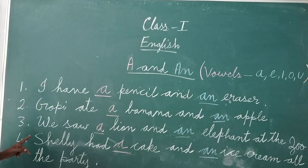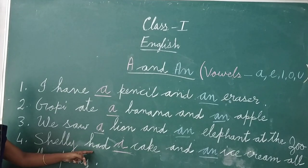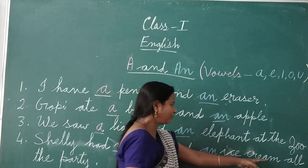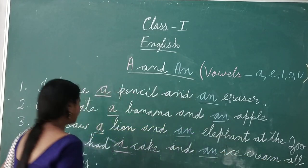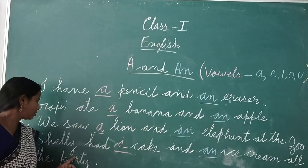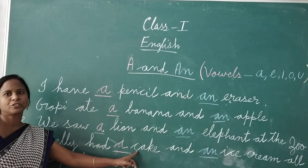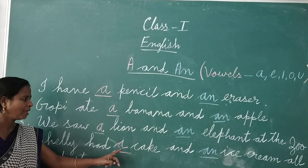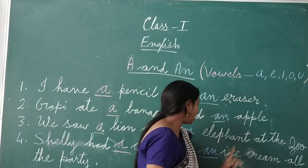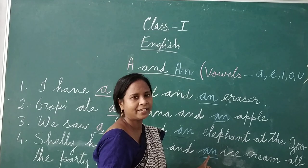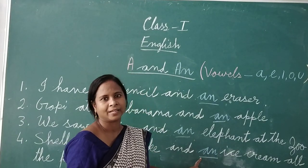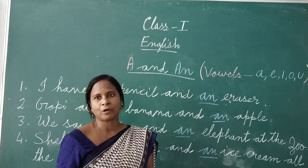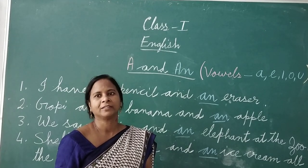Next sentence: Shari had a cake and an ice cream at the party. Here, cake starts with consonant C, so we use 'a'. And ice cream starts with vowel I, that is why we use 'an'. I hope it is clear for you when to use 'a' and when to use 'an'. Thank you.